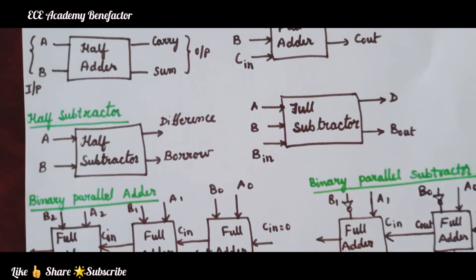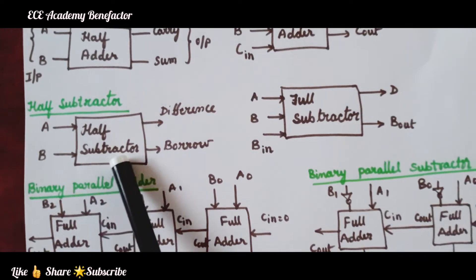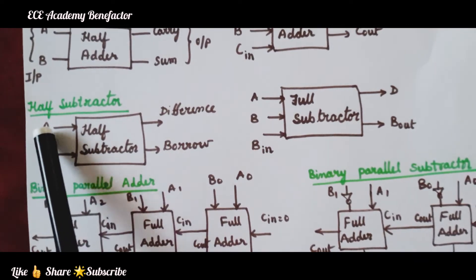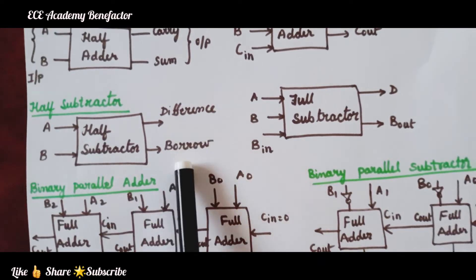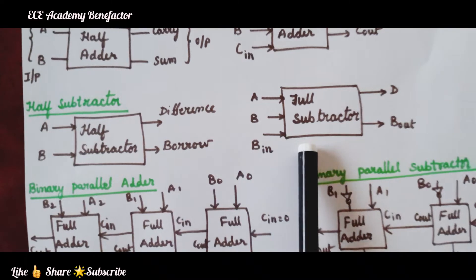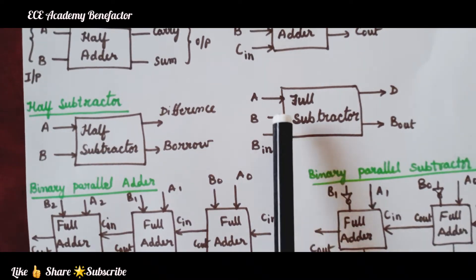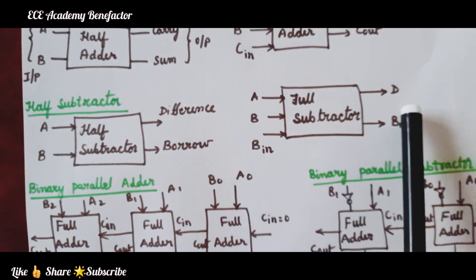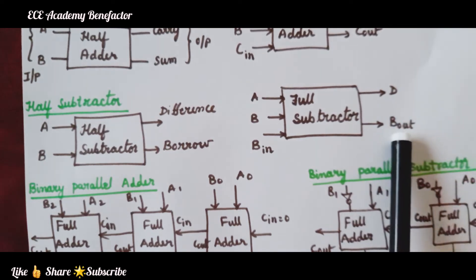Coming to the half subtractor: it is used for binary subtraction and has two inputs, A and B, and two outputs: difference and borrow. The full subtractor is also used for binary subtraction. It has three inputs — A, B, and borrow-in — and two outputs: difference D and borrow-out.